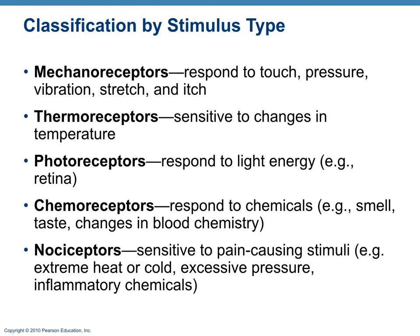Mechanoreceptors respond to touch, pressure, vibration, stretch, and itch. Thermoreceptors respond to changes in temperature — cold or heat. Photoreceptors respond to light energy; an example would be receptors in the retina. Chemoreceptors respond to chemicals — examples include smell, taste, changes in blood chemistry, sodium levels, and hormone levels. These are all picked up by chemoreceptors.